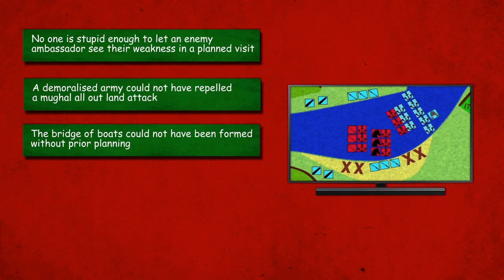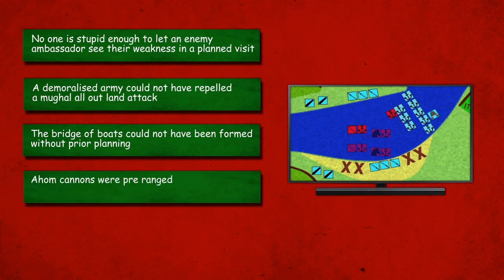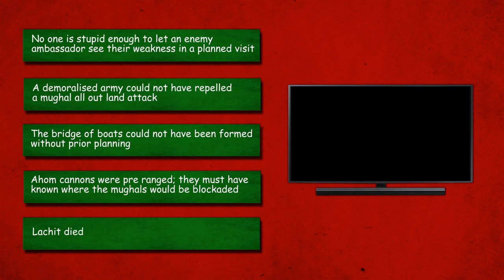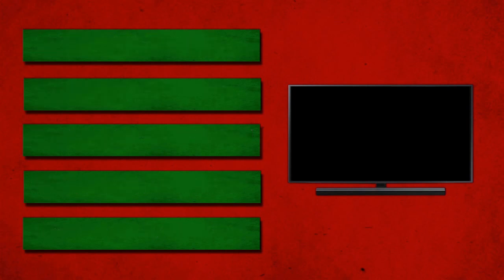The Burangis describe a 'well-directed Ahom attack' — meaning most of the cannonballs fired found their mark — which can only happen if the Ahom artillery knew where the Mughal naval forces would be blockaded and had already pre-ranged their cannons. And finally, Lachit died a year later but from an entirely different disease. The Burangis were written much later by collecting information from various sources, so it is quite possible that because Lachit died a year later from a disease, the chroniclers thought he was ill during the battle as well. Keeping these new points in mind, if we reconstruct what actually happened, we will see the real military genius of Lachit Borphukan.